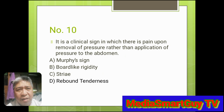Number 10. It is a clinical sign in which there is pain upon removal of pressure rather than application of pressure to the abdomen. A. Murphy's sign. B. Board-like rigidity. C. Stray. D. Rebound tenderness. Answer: Rebound tenderness.